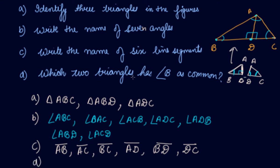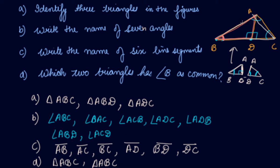Write which two triangles have B as a common angle. Triangle ABC — the full triangle — and the half triangle ABD, triangle ABD. These two have angle B as common: this whole triangle and this half triangle both have angle B as common. I hope you like our video. Please download our Scholars Learning App and enjoy the learning experience with us.